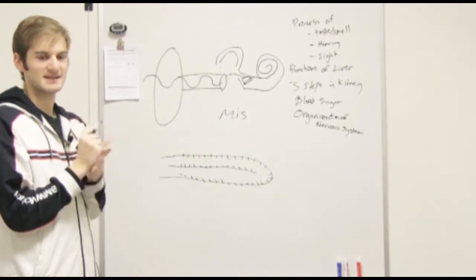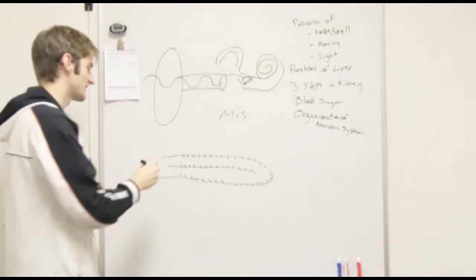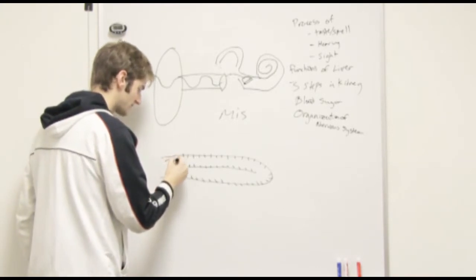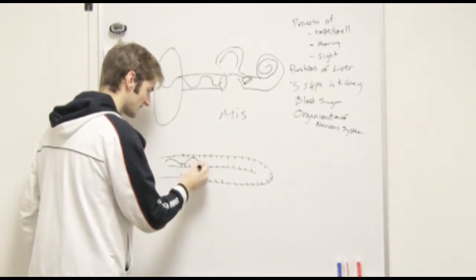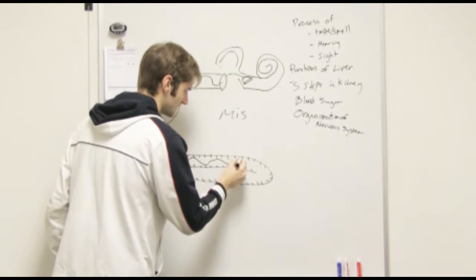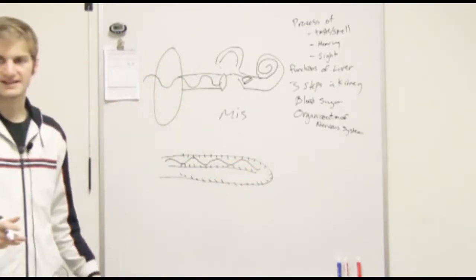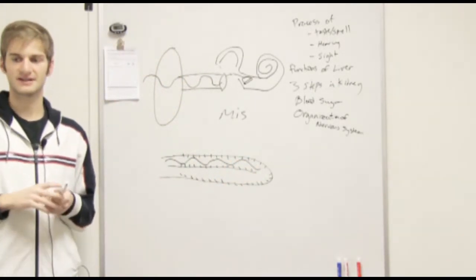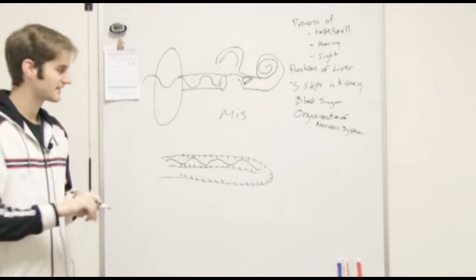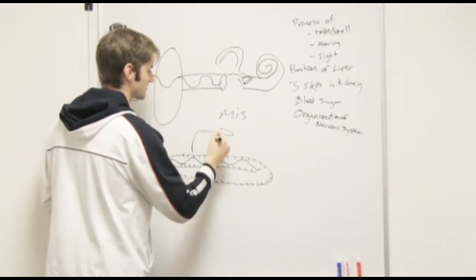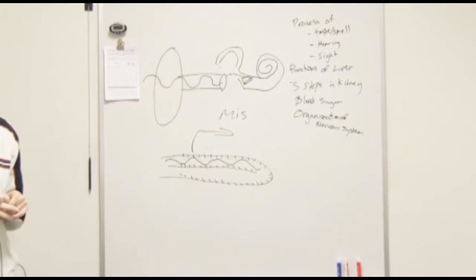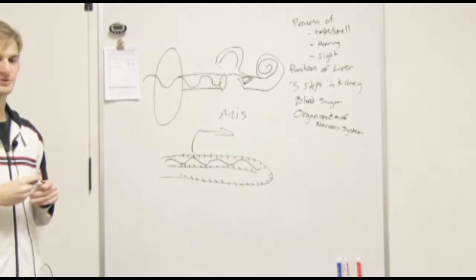So that stapes is hitting the oval window, sending vibrations. It sends that vibration through the cochlear fluid that makes waves like an ocean. Literally waves. Those waves hit different hair cells, and when they hit a hair cell, they bend it, and that bending of a hair cell sends an action potential to the brain. And that's what we interpret as sound.